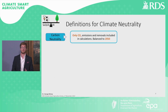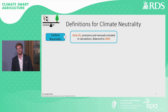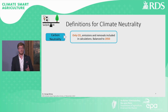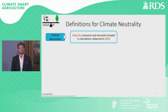We explored 10 different definitions of climate neutrality within this study. Carbon neutrality is often interchangeably used with climate neutrality. However, carbon neutrality considers only the carbon dioxide emissions and removals in the calculations, rather than every single greenhouse gas emission, which we here are balanced to 2050.